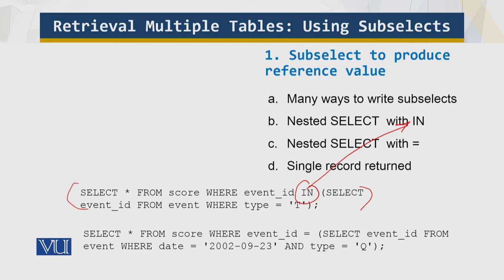Using a subselect to produce a reference value, you want the inner select to identify a single value to be used in the comparisons. This is the inner one. For example, to identify the scores for the quiz that took place on a certain date, use an inner select to determine the quiz event ID and then match score records against it in the outer select.